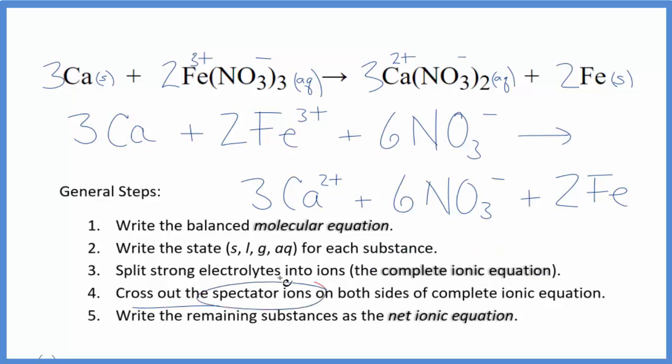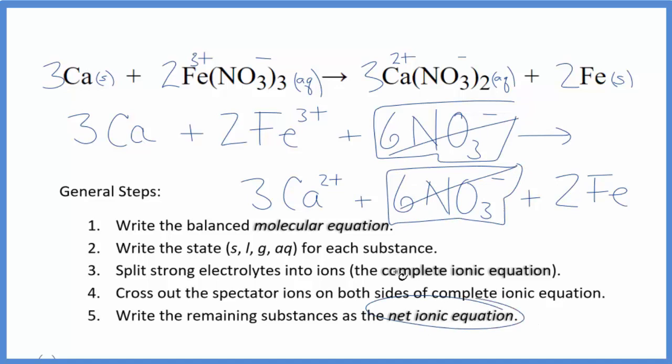Now we can cross out spectator ions. They're on both sides of the complete ionic equation. The only thing I'm seeing that's the same in the reactants and the products is this nitrate ion here. So I'm going to cross that out. And that'll leave the net ionic equation for Ca plus Fe(NO3)3.